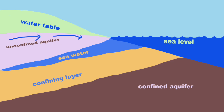As water travels towards sea level in an unconfined aquifer, saltwater can seep into the aquifer above the confining layer. Thus, a mixing zone is created with denser saltwater resting underneath the unconfined aquifer.